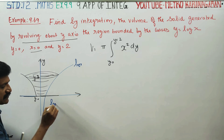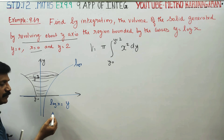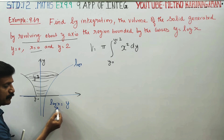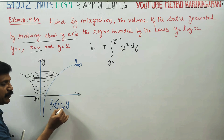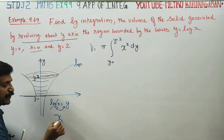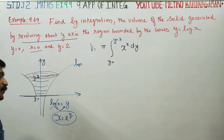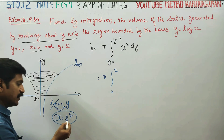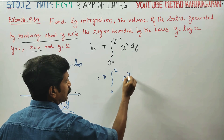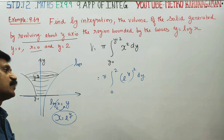Since log x is equal to y, we convert to exponential form: x equals e to the power y. Therefore x² equals e to the power 2y. The volume integral becomes π times the integral from 0 to 2 of e to the power 2y dy.